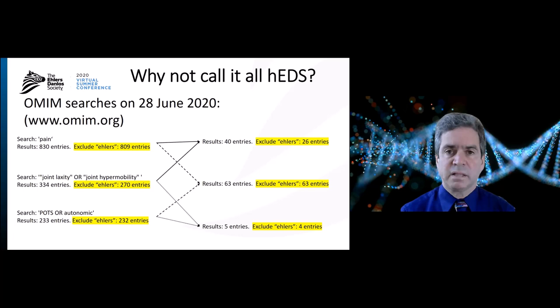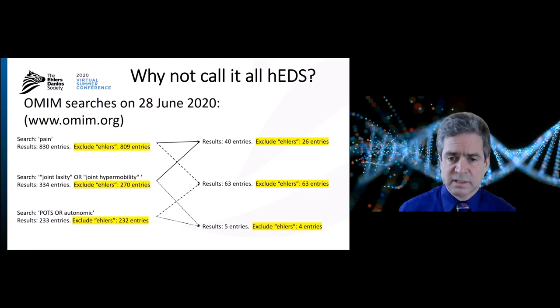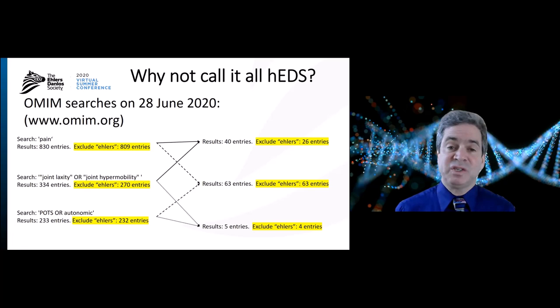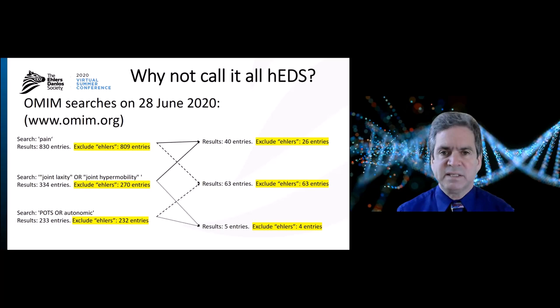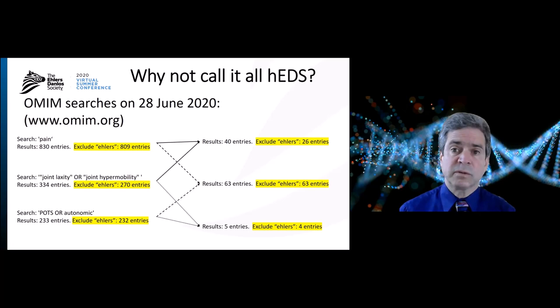The main point is that there are a lot of non-EDS genetic conditions that can manifest with pain, joint hypermobility, and cardiovascular autonomic dysfunction. And notably, EDS in OMIM does not give you a hit for pain plus POTS or autonomic dysfunction. So the situation is actually even worse than demonstrated — there are lots and lots of other causes for these complex associations of symptoms. It's a mistake to call them all the same thing if they're not.